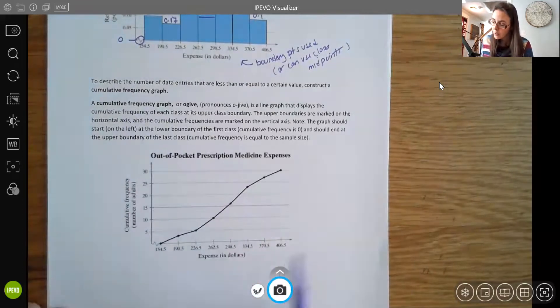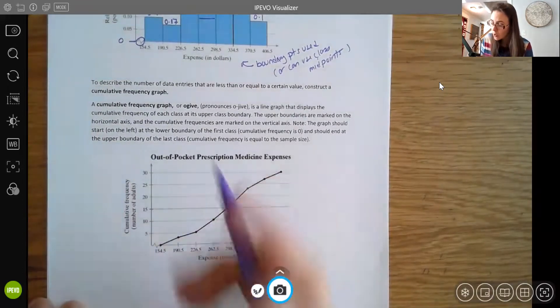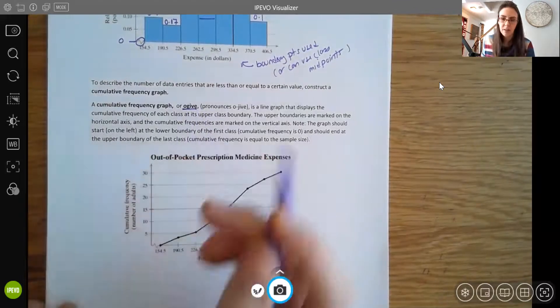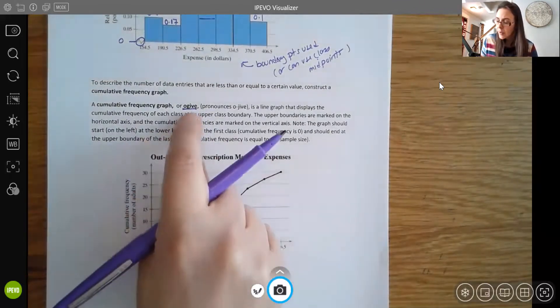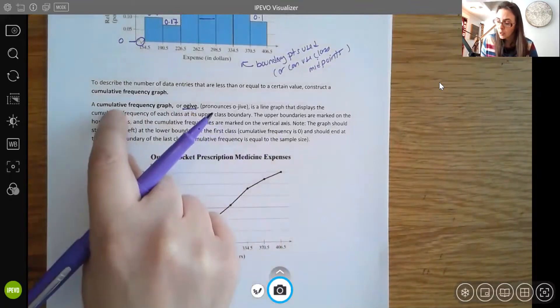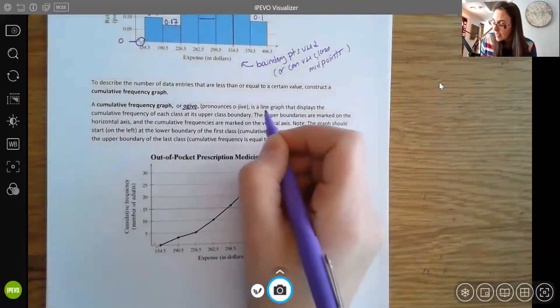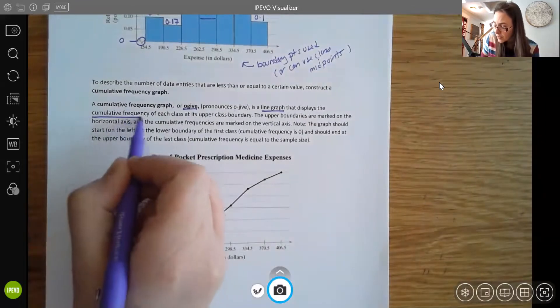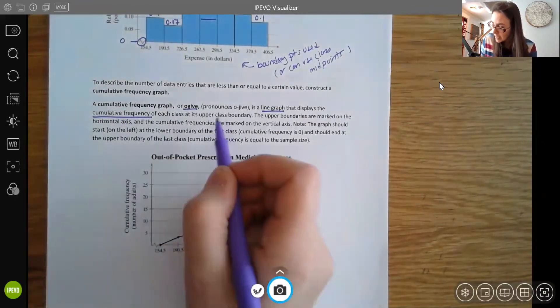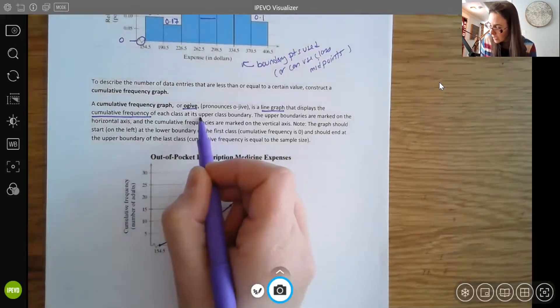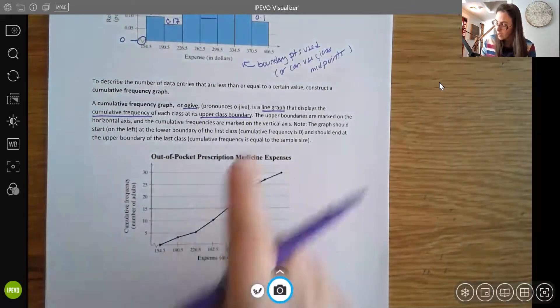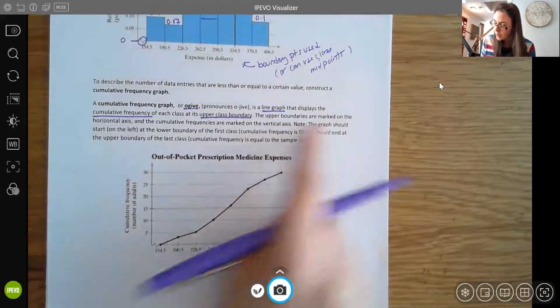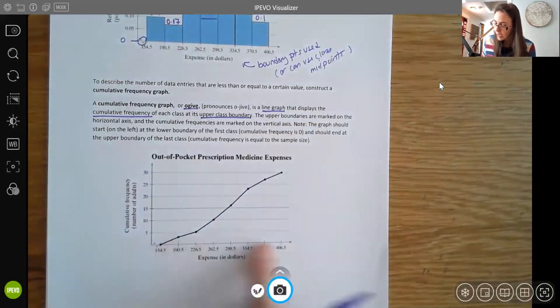To describe the number of data entries that are less than or equal to a certain value, we can construct a cumulative frequency graph. You're looking at those totals and combining all the intervals below it. A cumulative frequency graph, this is it here, is also called an ogive, which is what I hear more frequently. It is a line graph, not a bar graph. You can see line segments here that display the cumulative frequency of each class. On your x-axis, we're using the upper class boundary.